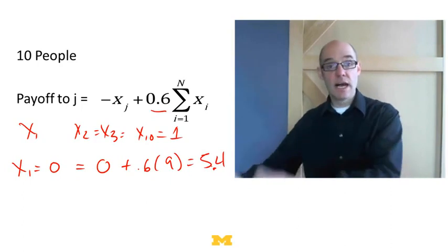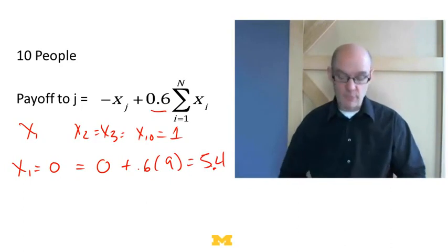So my payoff if I choose x1 equals 0 is just going to equal 0 plus 0.6 times 9, which is 5.4. Because everybody else is cooperating, there's 9 people cooperating, so I'm going to get 0.6 times that, which is 5.4, which is great.